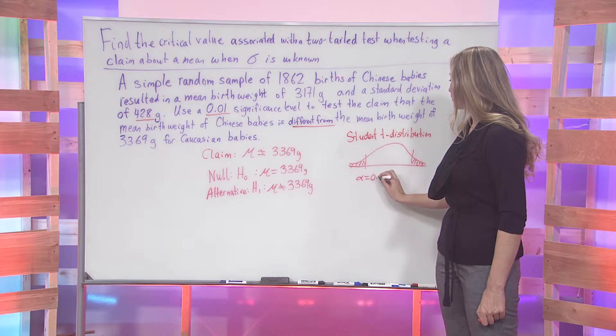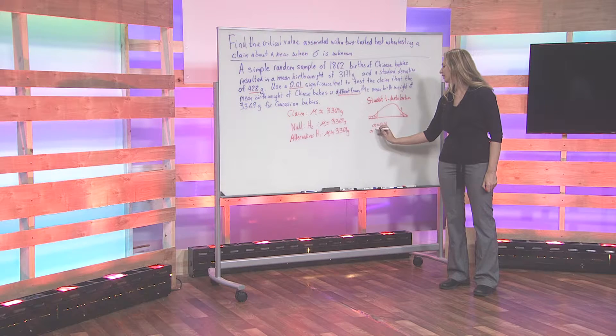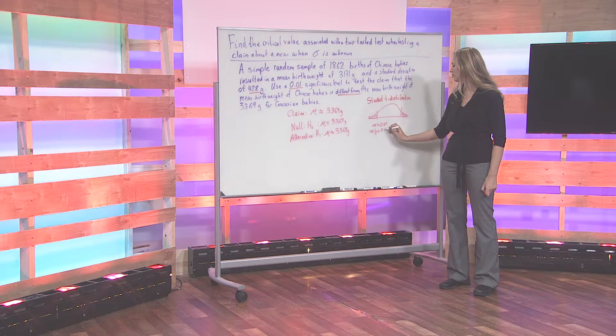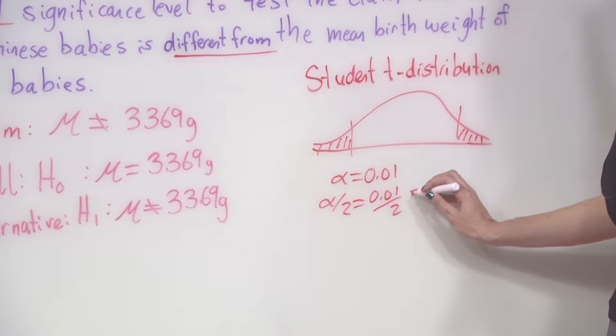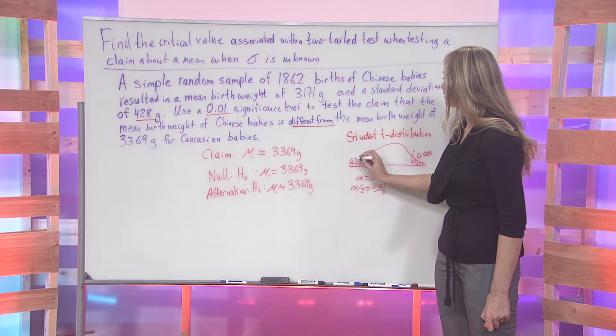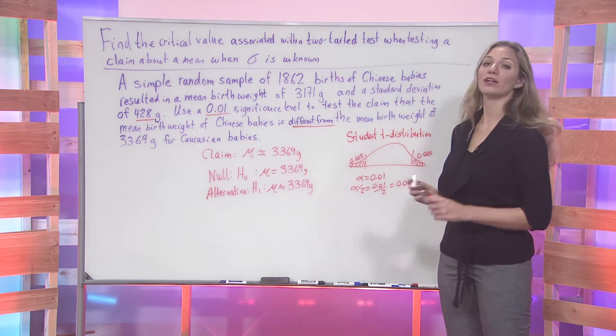Since alpha is 0.01, to see the area in each of the two chunks, we will divide the alpha by 2. 0.01 divided by 2 will give me 0.005. This would represent the area under each piece of my curve here.